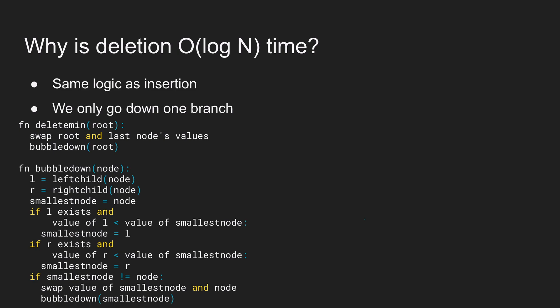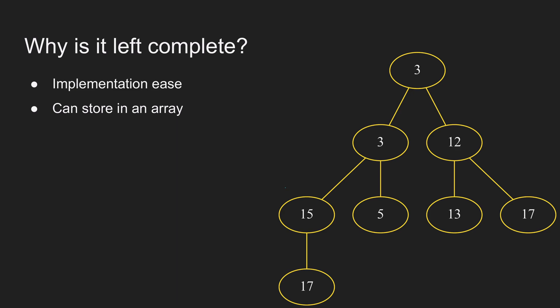Why do we want the binary heap to be a left complete binary tree? First, it ensures each row is filled before we start a new row, which is important to maintain the invariant that the tree height is about log₂ of n. If we don't do this — for example, if we put only one node in each row — then the height becomes n and complexities become linear instead of O(log n). Second, it's easier to implement because we can store the entire tree in an array and compute parent and child indices by multiplying or dividing by 2.